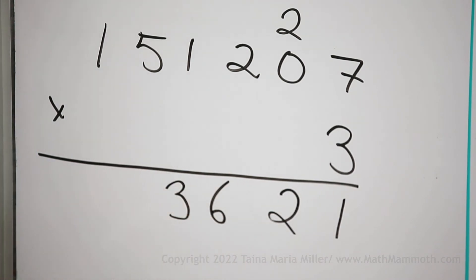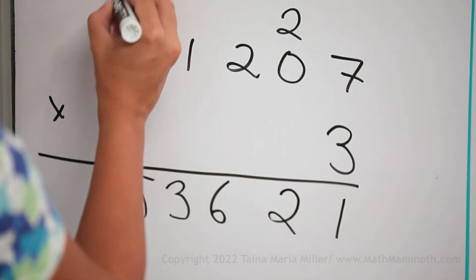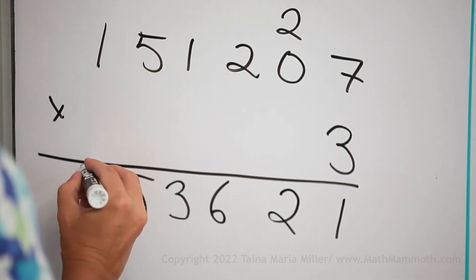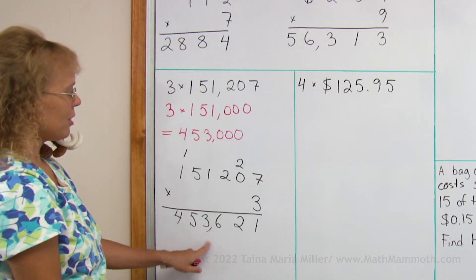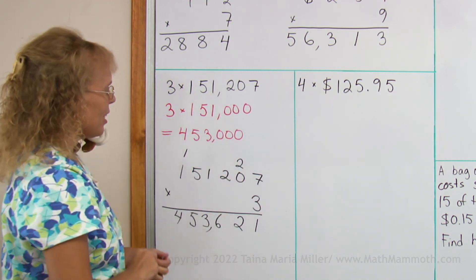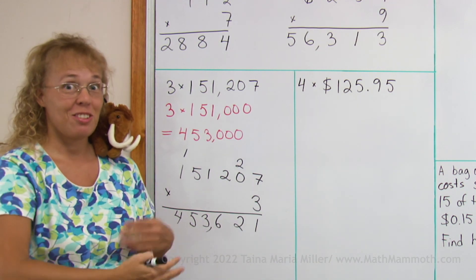3 times 5, 15. Now I need to regroup. And 3 times 1, plus 1, 4. Okay, 453,621. I hope I got it right. It is close to the estimate. But this one was a really easy multiplication because I did not constantly have to regroup.